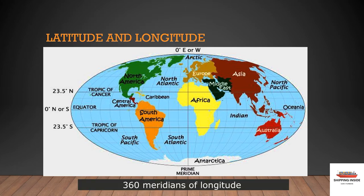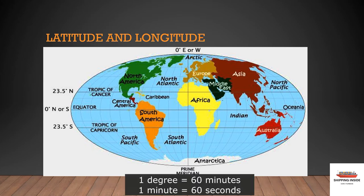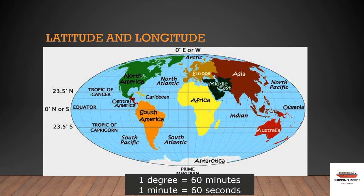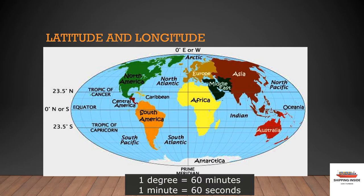There are 360 meridians of longitude, each one being referred to as a degree. Each degree is subdivided into 60 minutes and each minute into 60 seconds. Refer now to the map and find a line cutting England from north to south. This line is zero degrees of longitude and it is called the Greenwich meridian. There are 180 parallels and, same as with meridians, each one being referred to as a degree.